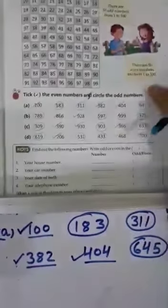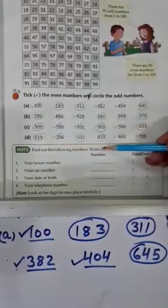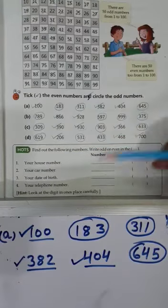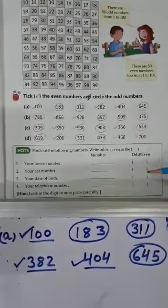Next question is find out the following number. Write odd or even number. This means you have to find out numbers and odd or even you have to write in brackets.